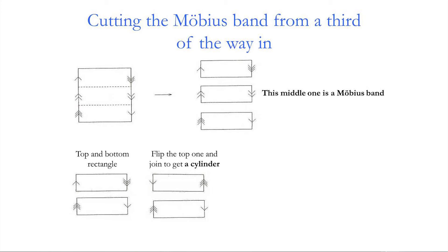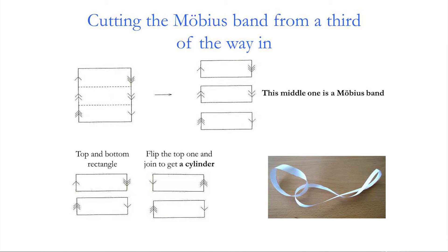The other two rectangles must be connected to each other — there's a single arrow in the top one and a single arrow in the bottom one, and a triple arrow in each. Arranging them and flipping one to match the arrows, then joining them up, gives a cylinder. So cutting the Möbius band a third of the way in results in two things: a Möbius band and a two-sided loop. It's a reasonably powerful technique for analysing these complicated and interesting shapes.